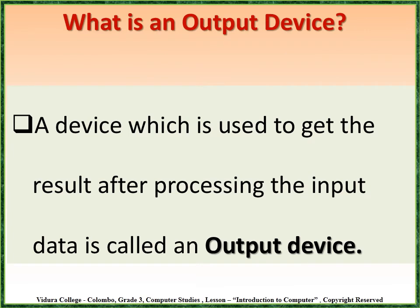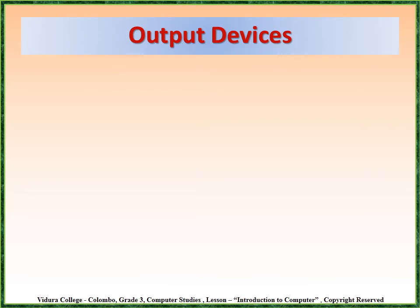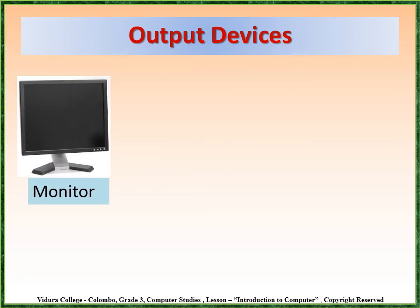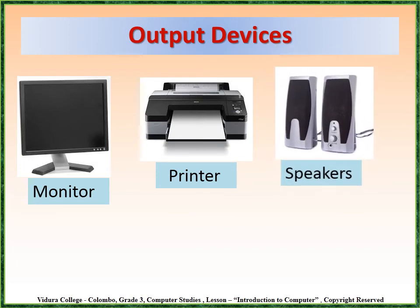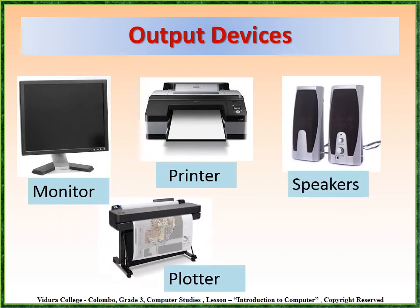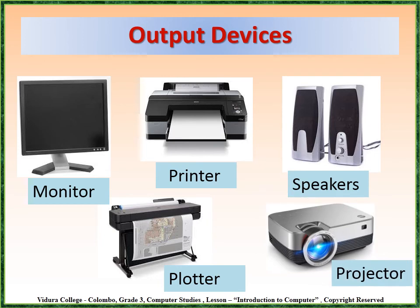What is an output device? A device which is used to get the results after processing the input data is called an output device. Here you can see examples of output devices: monitor, printer, speaker, plotter, projector.